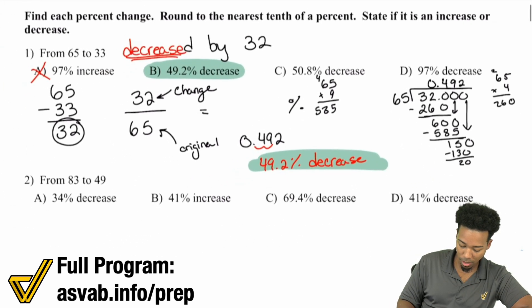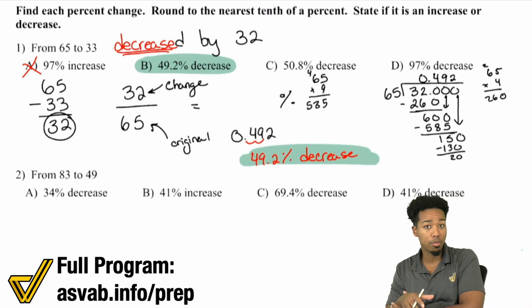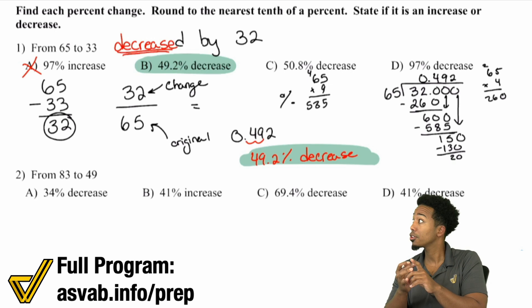This may look difficult or crazy, but you have to think about it in the grand scheme of things. What we're looking at is, what was the change in percent from the original number to the result? You need to write the change as a percent, not the result as a percent. Another way to do it would be to find what 33 over 65 is as a percent, then take it away from 100%. That's also a valid way.